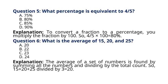Question 5. What percentage is equivalent to 4 by 5? A. 75%, B. 80%, C. 85%, D. 90%. Explanation: To convert a fraction to a percentage, you multiply the fraction by 100. So, 4 by 5 into 100 is equal to 80%. So the correct answer to question 5 is option B. 80%.